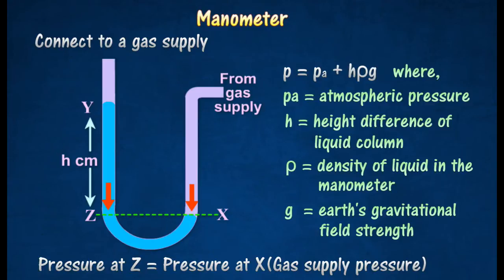Thus, the gas pressure equals the atmospheric pressure plus pressure due to liquid column YZ, as shown in the following expression.